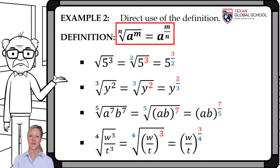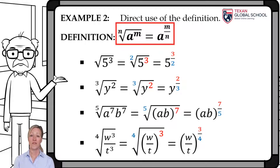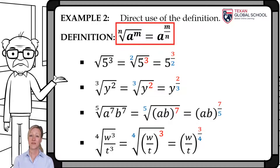The square root of 5 cubed equals 5 to the 3 halves — the exponent of the base goes as the numerator and the index as the denominator. The cube root of y squared is equivalent to y raised to 2 thirds. The fifth root of a to the seventh times b to the seventh equals ab raised to 7 fifths. The fourth root of the quotient w cubed over t cubed equals the quotient w over t raised to 3 quarters.